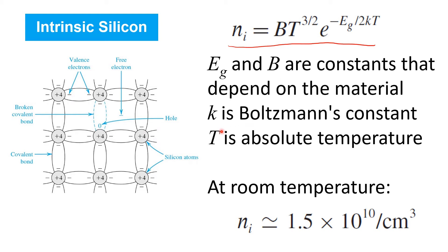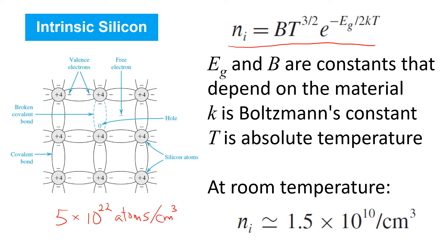It turns out that at room temperature in silicon, the concentration of free electrons would be 1.5 times 10 to the 10 free electrons per centimetre cubed. This may sound like a large number, but keep in mind that the silicon lattice itself consists of 5 times 10 to the 22 atoms per centimetre cubed. So clearly, this is a very tiny fraction.